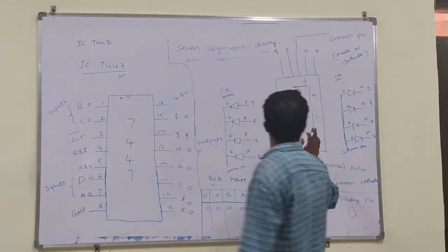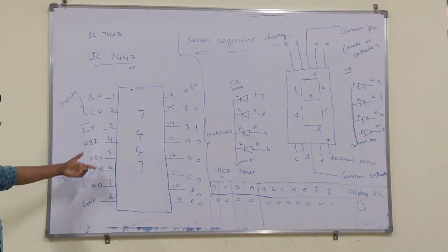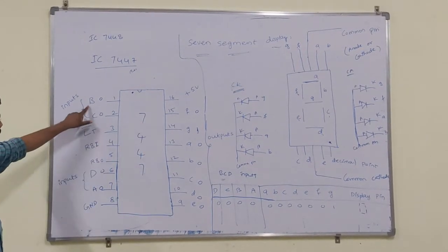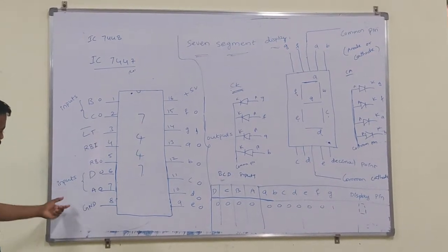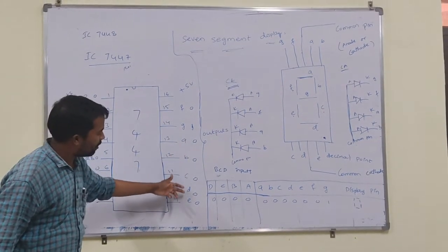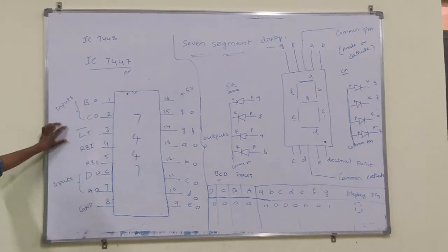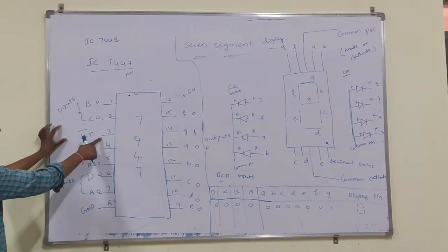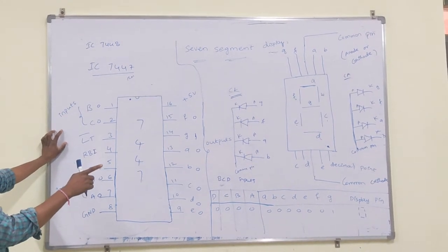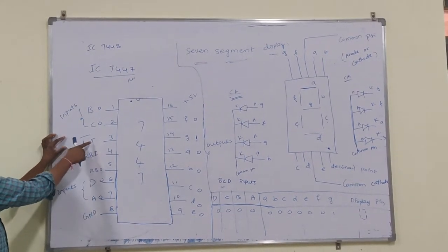The next component is the driver IC, which has a total of 16 pins. The inputs are B, C, D, K, and the outputs are small f, G, A, B, C, D. The third pin is the LTE bar, which performs a lamp test. LTE bar is active low — if you give LTE bar a logic 0, the lamp test is activated, which is used to check whether the seven segment display is working or not.